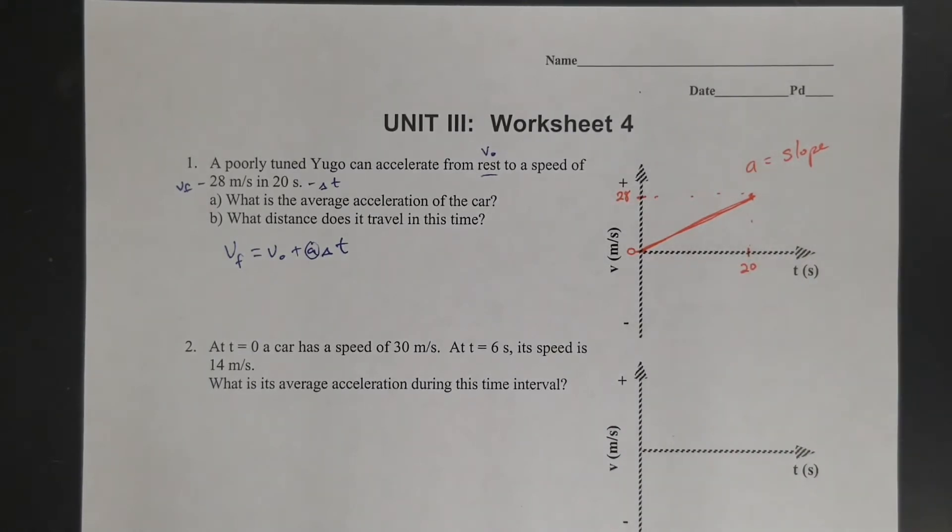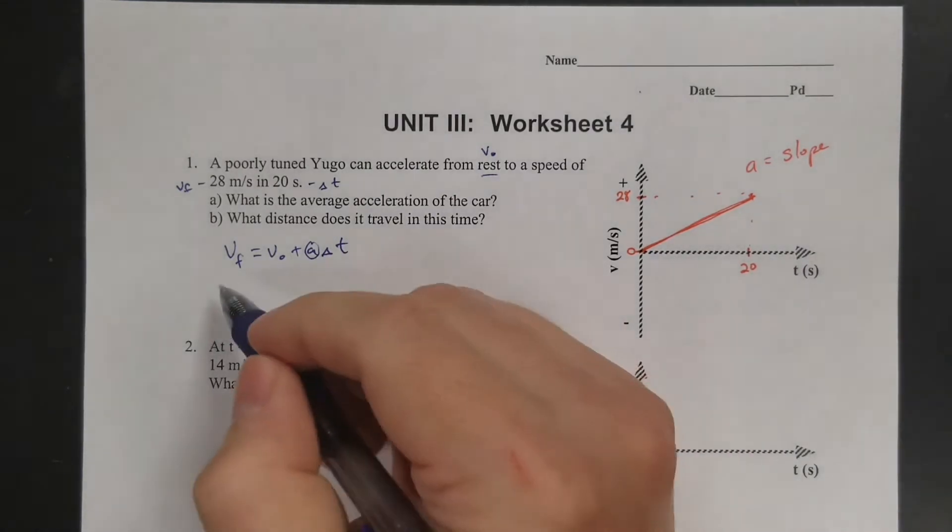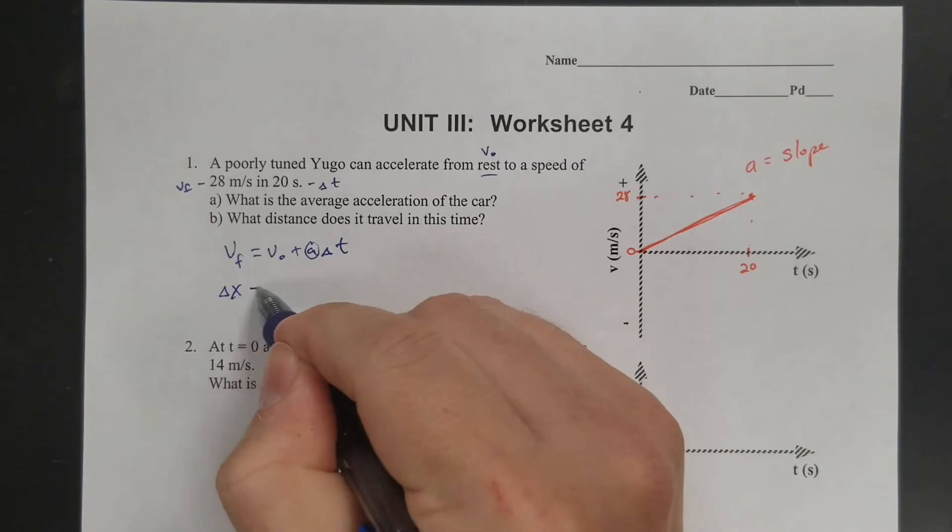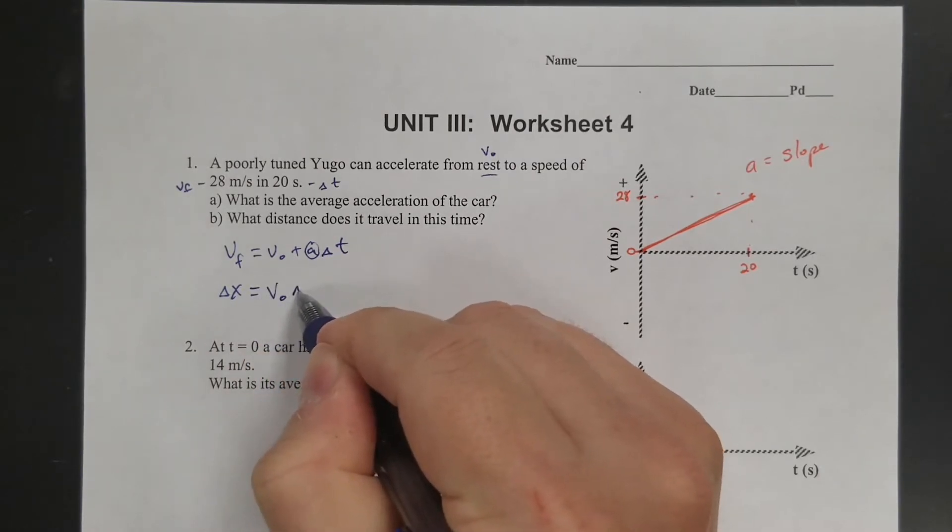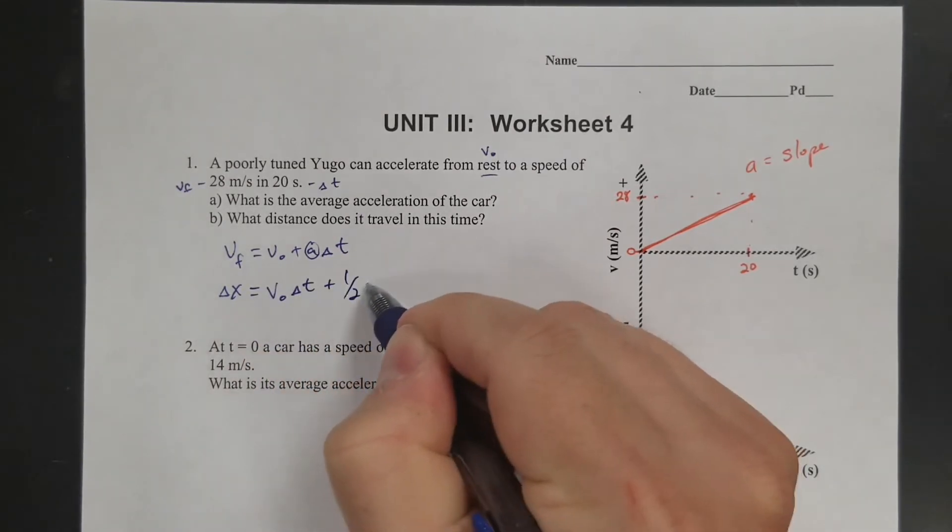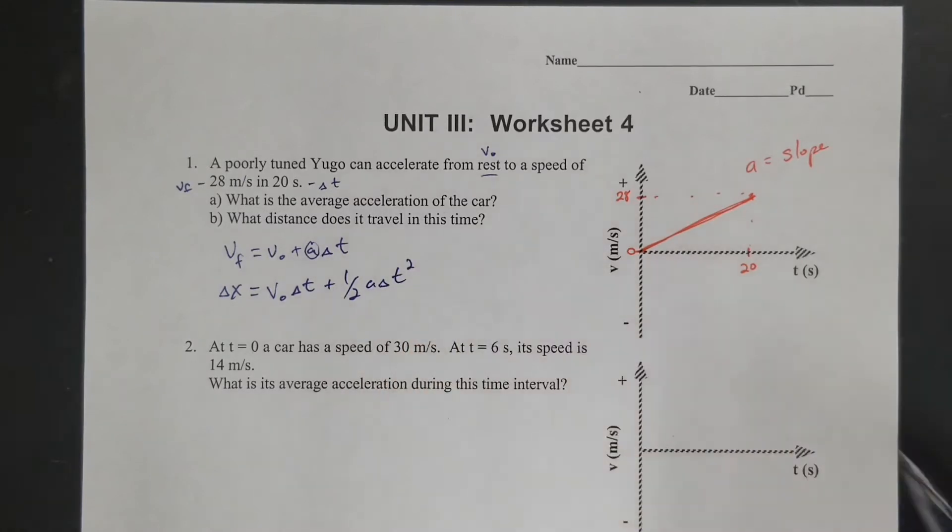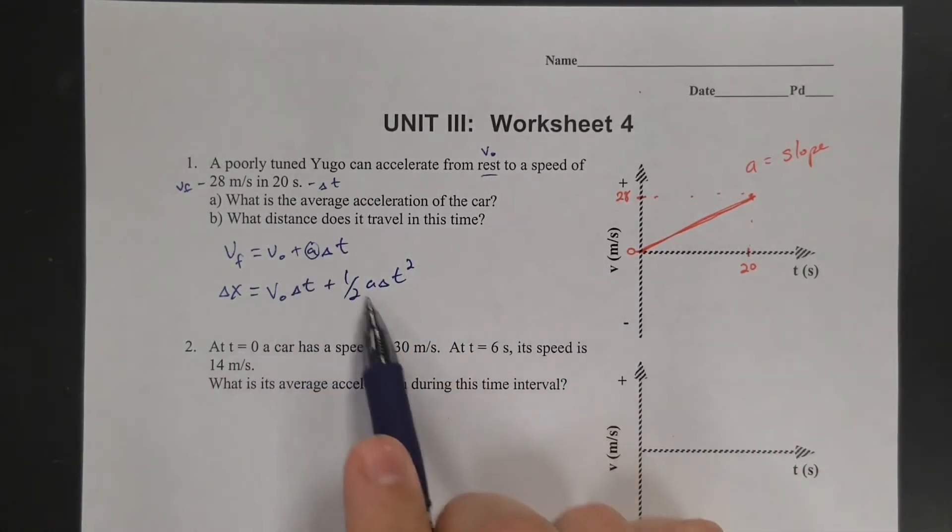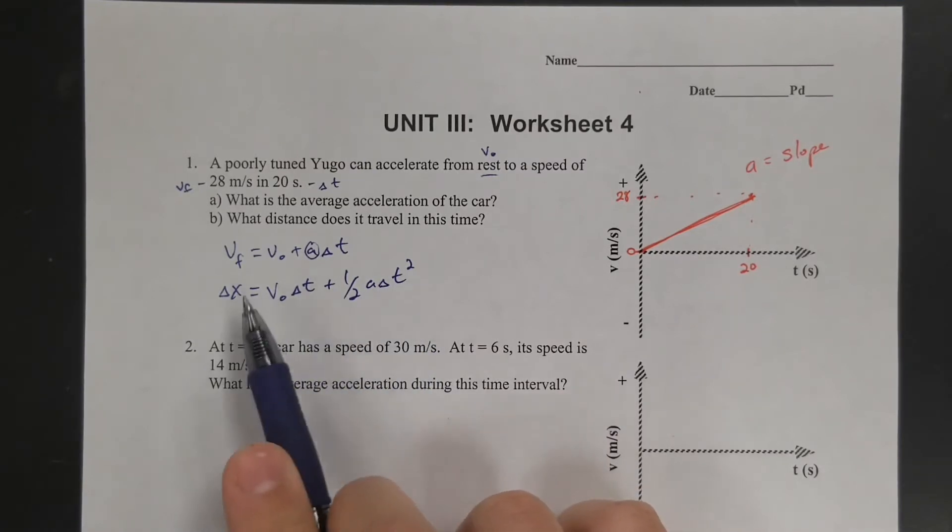So second one, what distance does it travel? Well, you have two other equations to pick from, but the one I would usually start with is this one: V naught delta t plus 1 half A delta t squared, the quadratic one. And so again, I solve for acceleration up here, so that I can plug here. I know the time. I know the initial velocity, so you could solve for this.